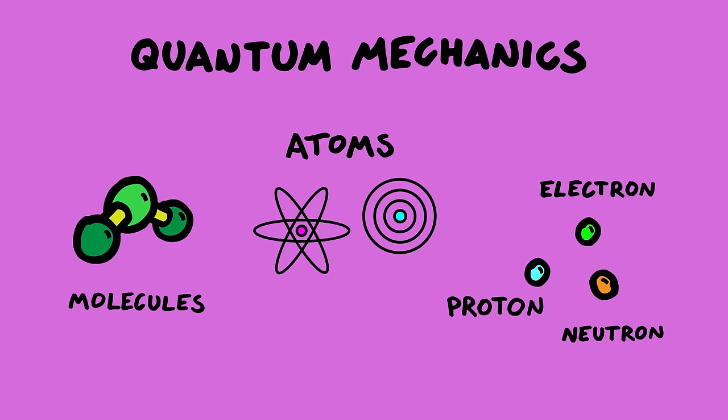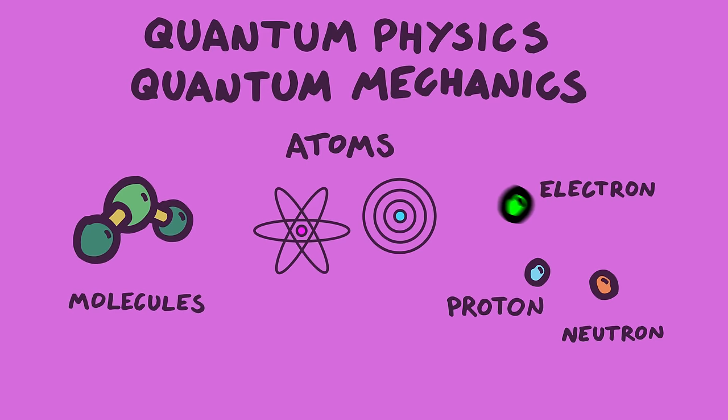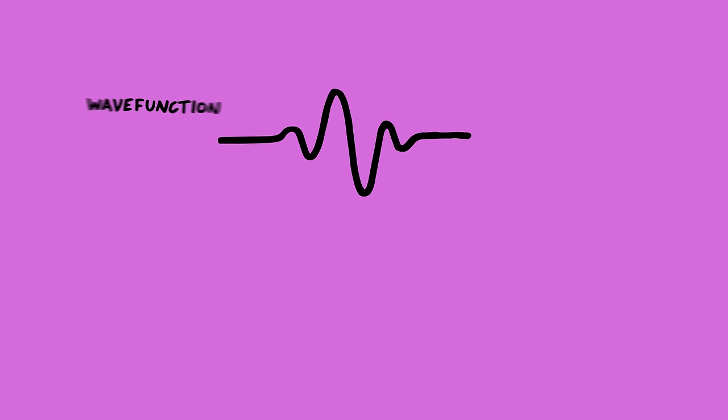I've drawn these protons, neutrons, and electrons as particles, but in quantum mechanics we really describe everything as waves. By the way, I'm using quantum physics and quantum mechanics interchangeably, they're the same thing. So instead of an electron looking like this, it should look something like this. This is called a wave function.